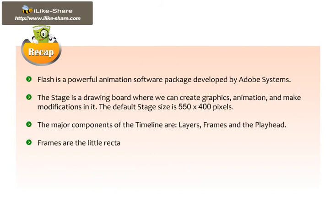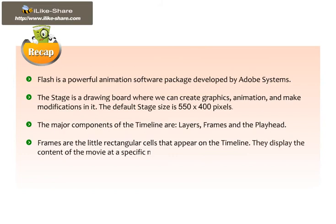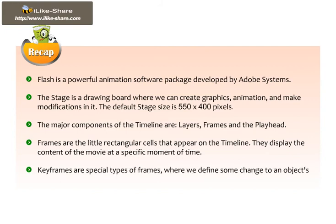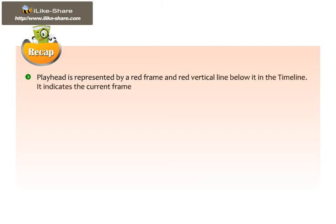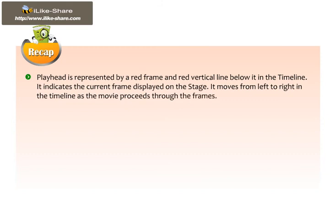Frames are the little rectangular cells that appear on the timeline. They display the content of the movie at a specific moment of time. Keyframes are special types of frames where we define some changes to an object's properties for an animation, like position, color, shape, etc. The playhead is represented by a red frame and red vertical line below it in the timeline. It indicates the current frame displayed on the stage and moves from left to right as the movie proceeds through the frames.